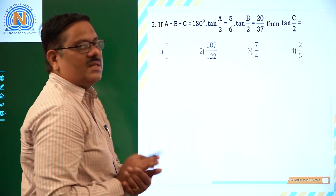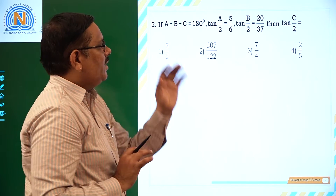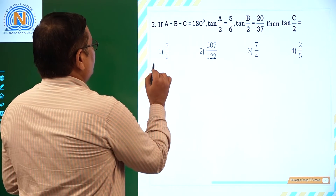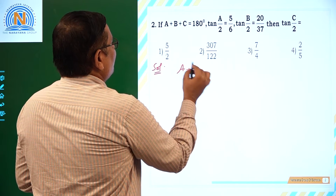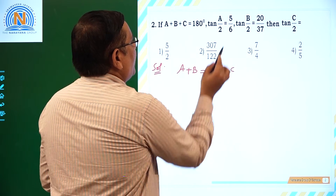Next question: if A plus B plus C is 180 degrees, tan(A/2) is 5 by 6, tan(B/2) is 20 by 37, then what is tan(C/2)? Since A plus B plus C equals 180, we take A plus B as 180 minus C. Dividing both sides by 2, A/2 plus B/2 equals 90 degrees minus C/2.